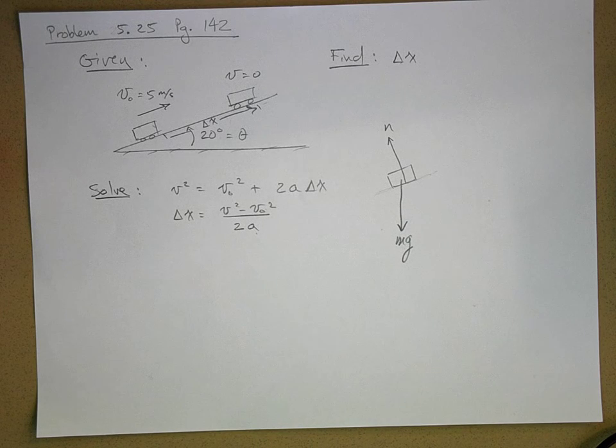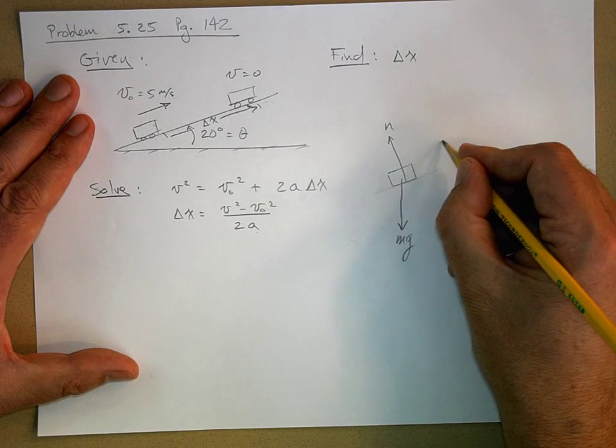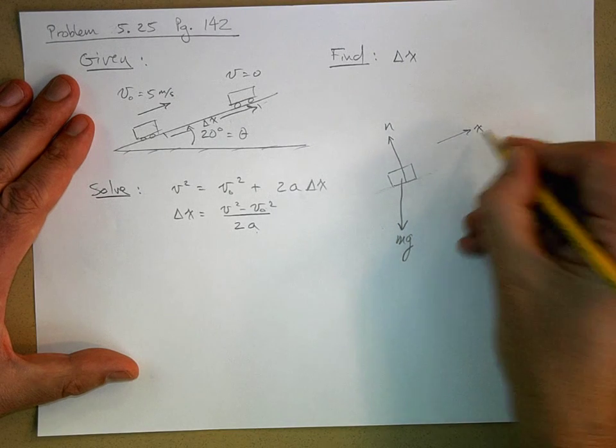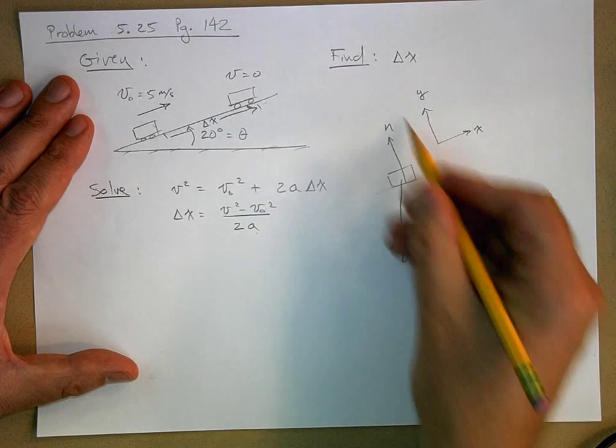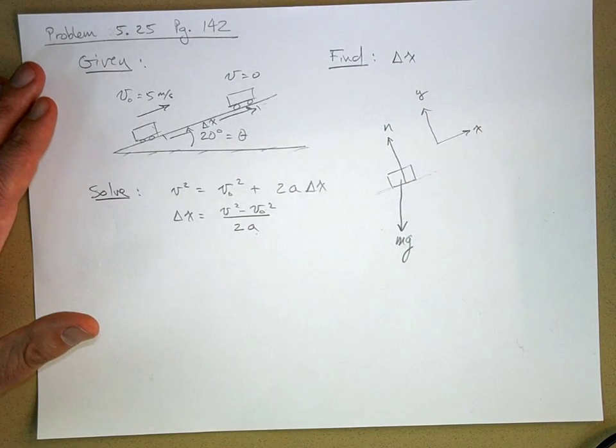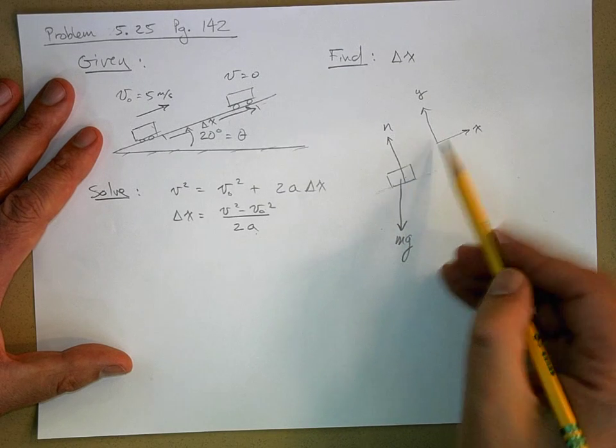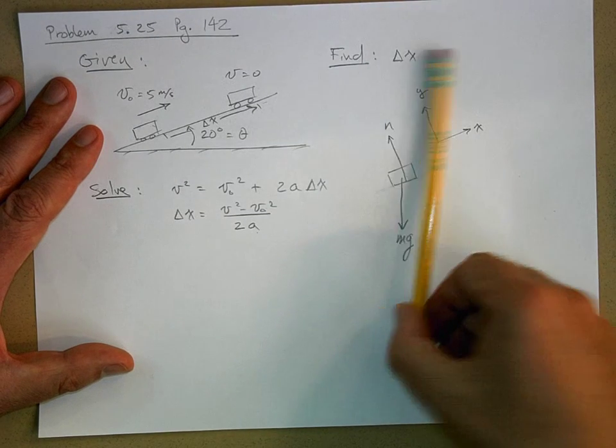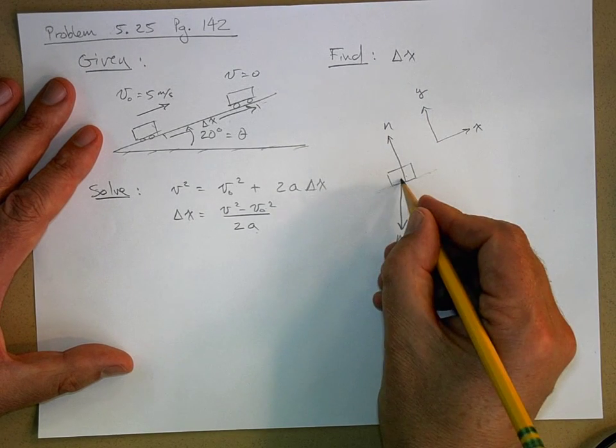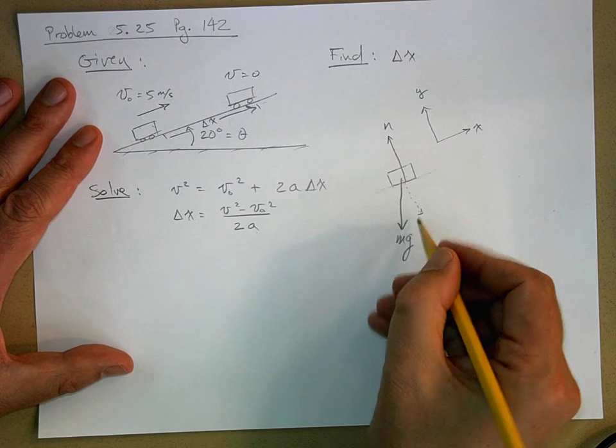Establish our x and y axis and break up the forces into their x and y components. So I'm going to make going up the incline positive x and perpendicular to the incline positive y. Now the normal force is all in the y direction. But look at gravity. Gravity is now at an incline. I'm going to draw gravity very well. So let's break up gravity into its components. We've got this force that's in the y component. And then we have this force that's parallel or in the x direction.